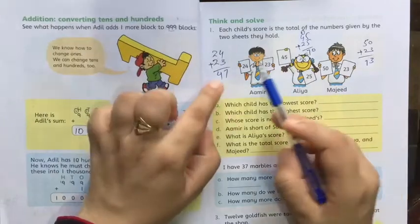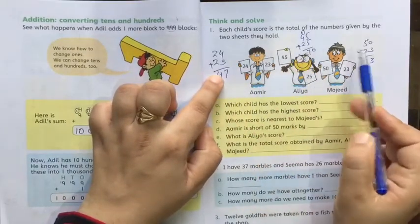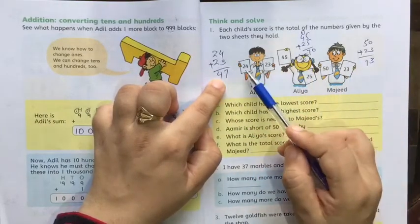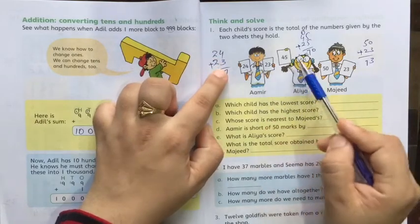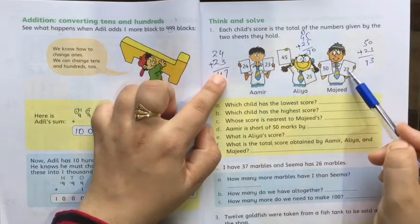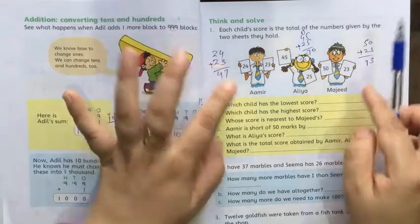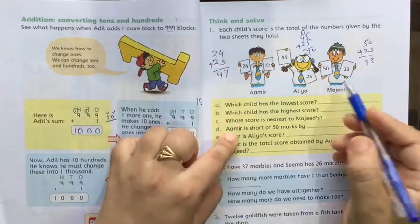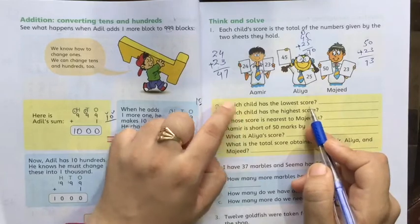You can only solve these questions when you do the addition here. You have to do the addition for all three questions. Amir's scores: add 23 and 24, then 45 and 25, then 50 and 23. Solve all three questions first, then solve the questions below.